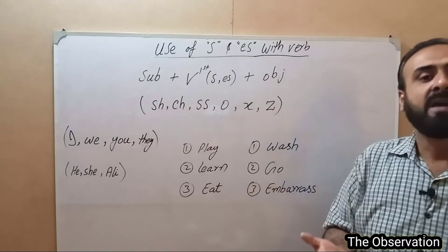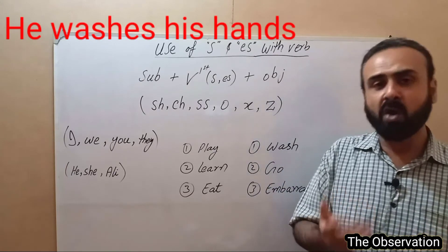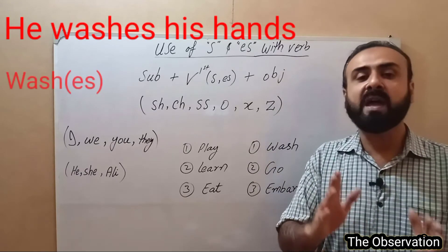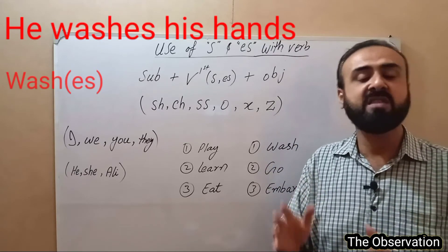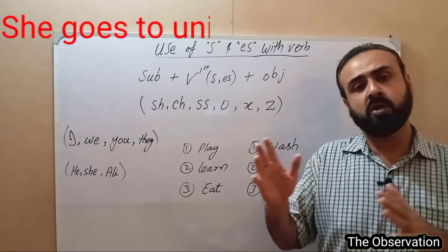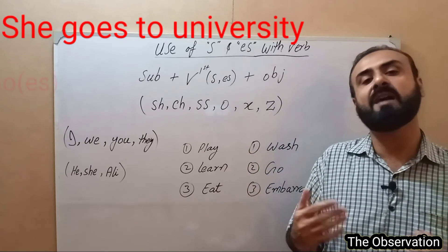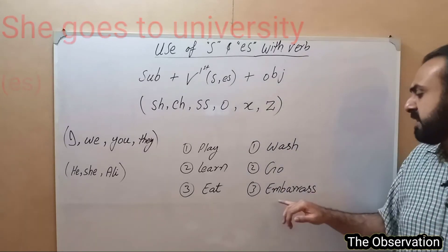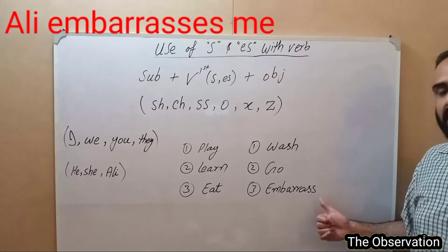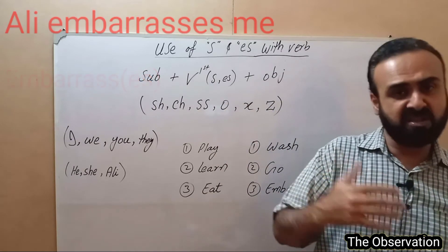Now for verbs that take ES: 'wash' ends in SH, so we say he washes his hands — ES is added. Similarly, 'go' becomes she goes to university — ES is added to go. And 'embarrass' ends in double S, so Ali embarrasses me — ES is added. You can see that double S is also on this list of endings that take ES.